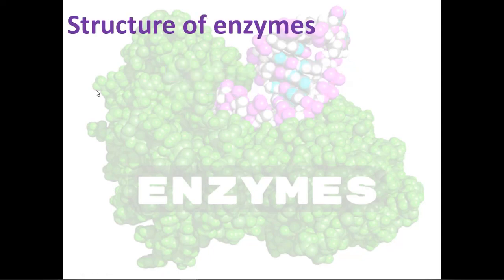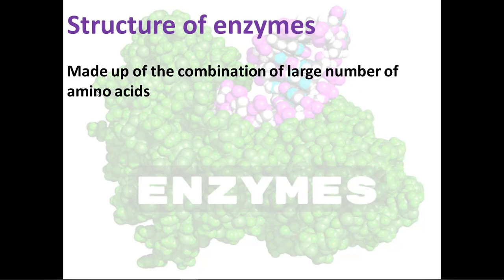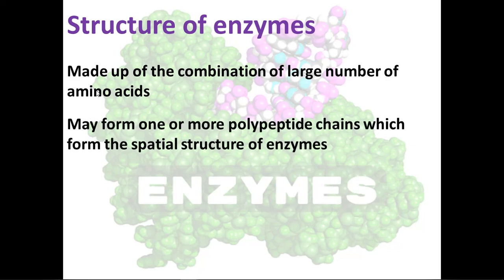So what is the structure of enzymes? Enzymes are made up of a combination of a large number of amino acids. Enzymes can be formed from one or more polypeptide chains which form a special structure. They have a structure that is very complicated — it can be formed from one polypeptide chain or multiple polypeptide chains.